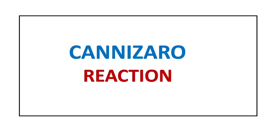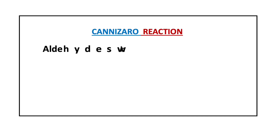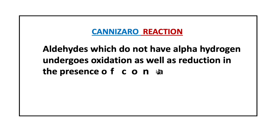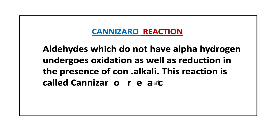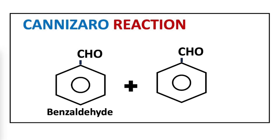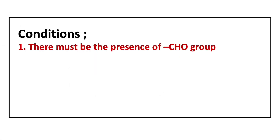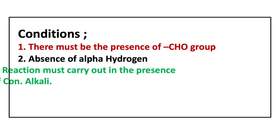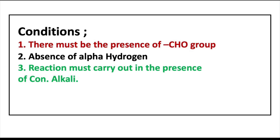Welcome to Aurora Chemistry for Everyone. Aldehydes which do not have an alpha hydrogen atom undergo oxidation and reduction in the presence of concentrated alkali. This reaction is called the Cannizzaro reaction. We are here to discuss the Cannizzaro reaction between benzaldehyde molecules. The reaction must satisfy certain conditions: there must be the presence of an aldehyde functional group, and there must be the absence of an alpha hydrogen atom.